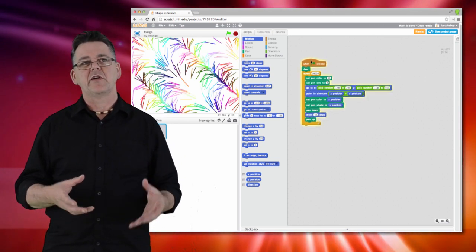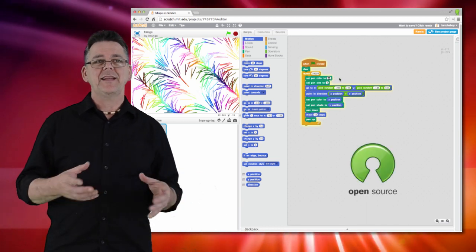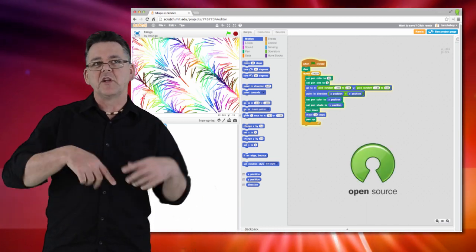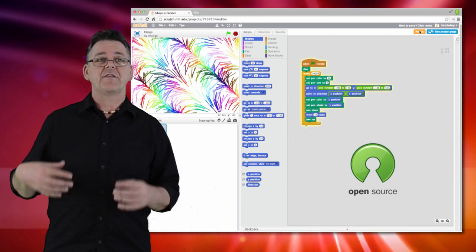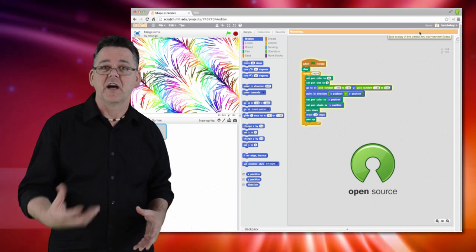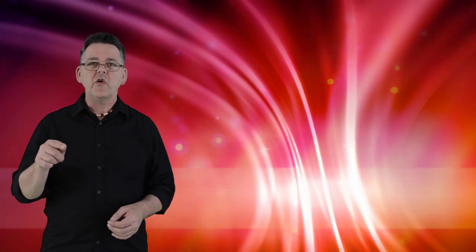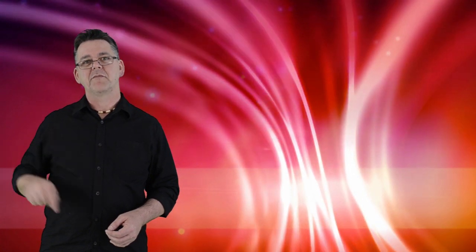In the programming world, this idea is known as open source. And the ability to see each other's code, to learn from it, copy it, remix it, and share it, forms a fundamental part of the culture of programming. In coding, you learn from each other. And it's this social aspect of coding that's really important.